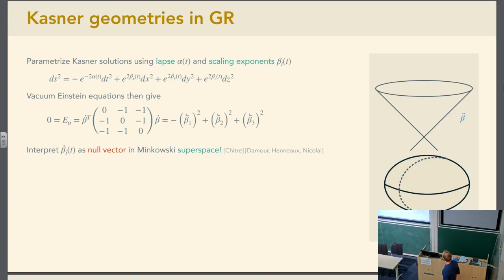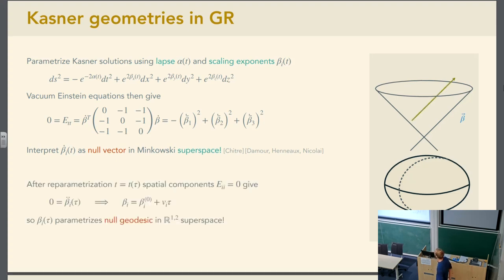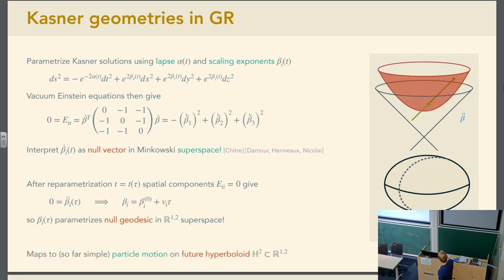This ultimately comes from the Wheeler-DeWitt structure of the Einstein equations. But what this equation is telling you is that these betas can be interpreted as some kind of null vector in some external three-dimensional Minkowski superspace. This is an observation that goes back to Chitre in the 70s, and is very much motivated by this cosmological billiard story. Corresponding to a given Kastner geometry, we have some null vector in a Minkowski superspace. In fact, if you look at the other Einstein equations, this vector is really supposed to be a null geodesic, just a straight line in this external Minkowski space.